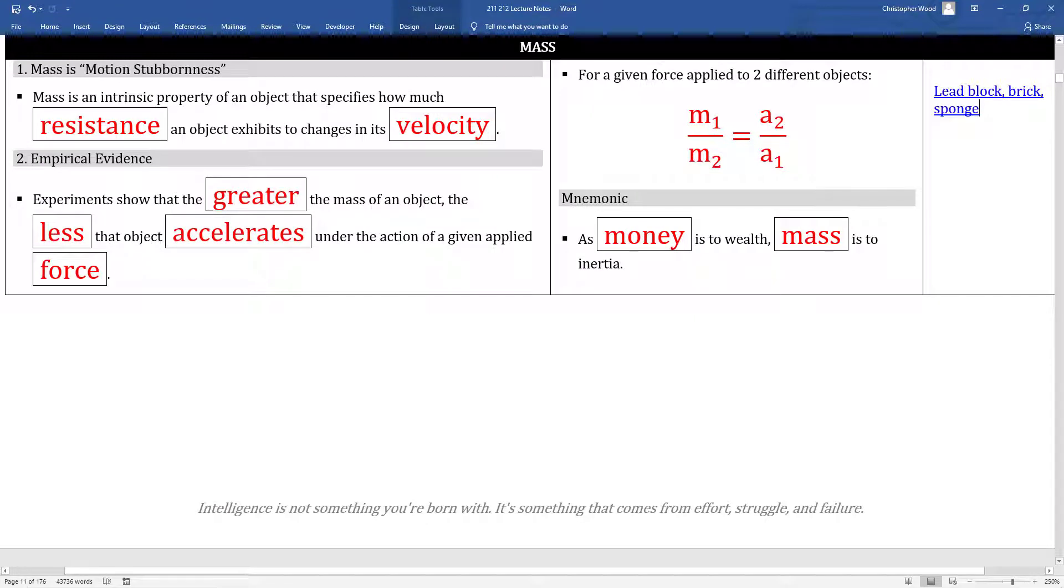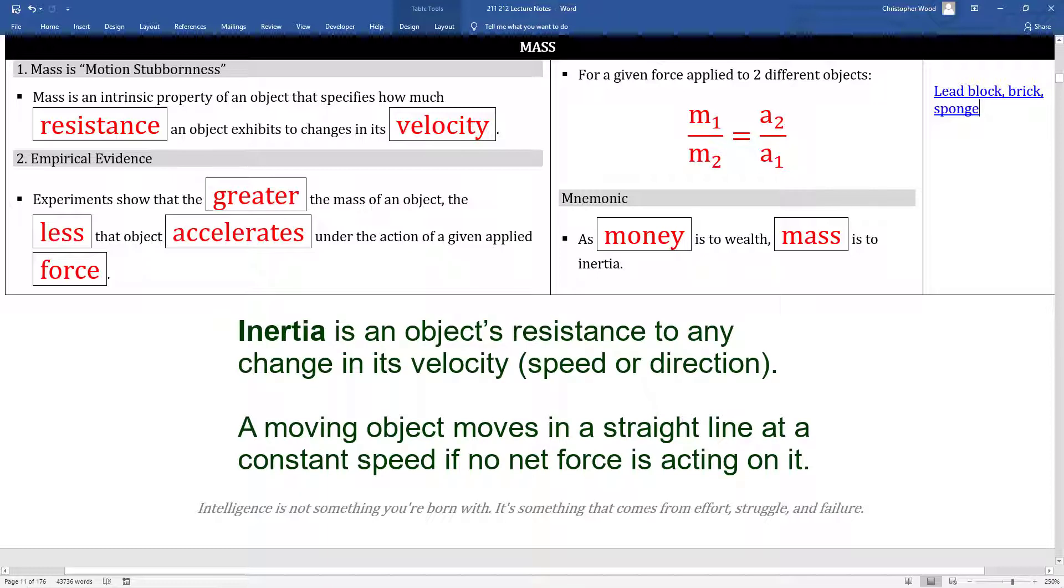Here's a different way to think of mass. Mass is motion stubbornness. The greater the mass, the greater its resistance to having its velocity changed. Another word for motion stubbornness is inertia. Here's a useful mnemonic. As money is to wealth, mass is to inertia. You could say, money is the measure of one's wealth, and mass is the measure of an object's inertia.